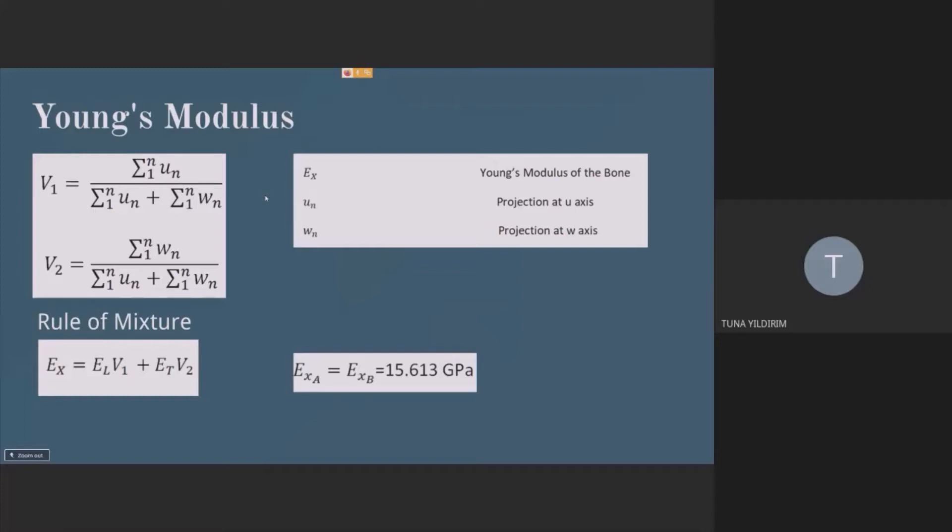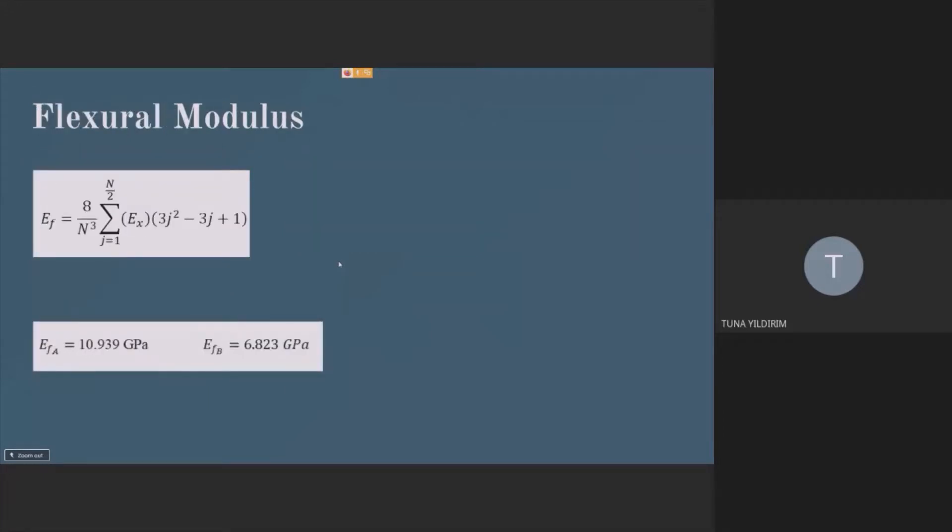And from my results, I found out that Young's modulus is the same for both of the models, even though they have different orientations. I did it by applying rule of mixtures, which I've learned from the mechanics of composites lecture. And for flexural modulus, it came out different for the two models. So this is also satisfying as well.